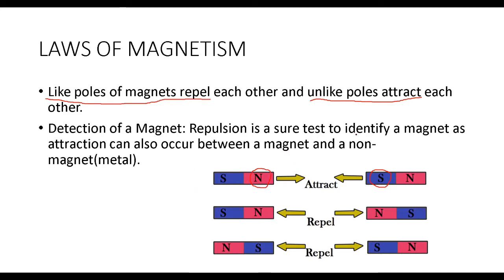When you bring the north pole of one magnet close to the south pole of another magnet, they both attract each other. But when you bring the north pole of one magnet close to the north pole of another magnet, they are like poles, so repulsion occurs and the magnets move away from each other. The same case happens when you have two south poles brought close to each other.